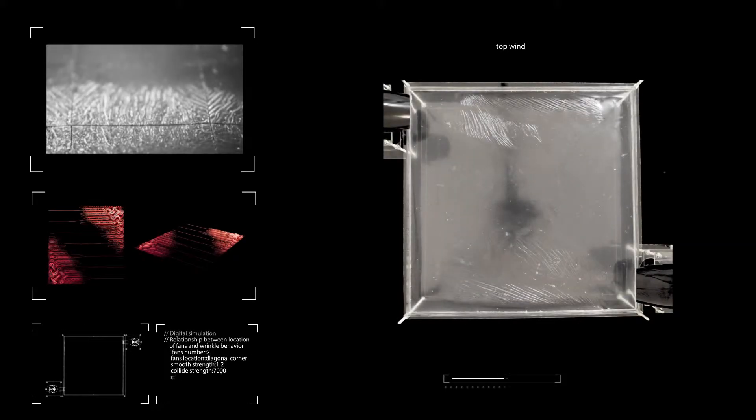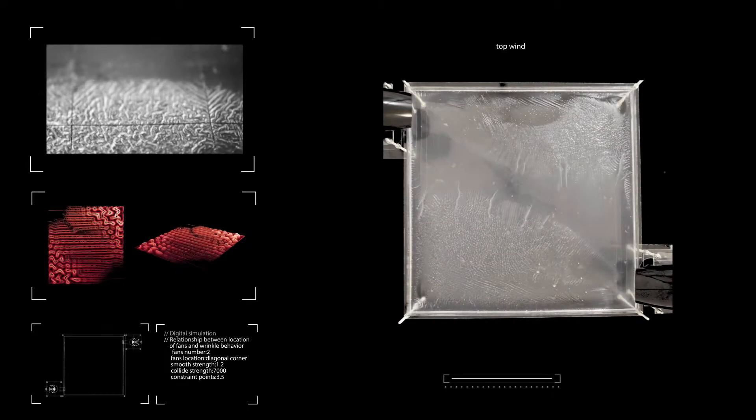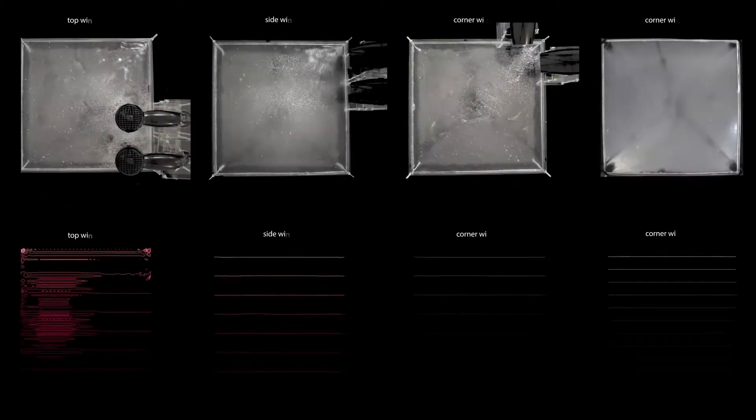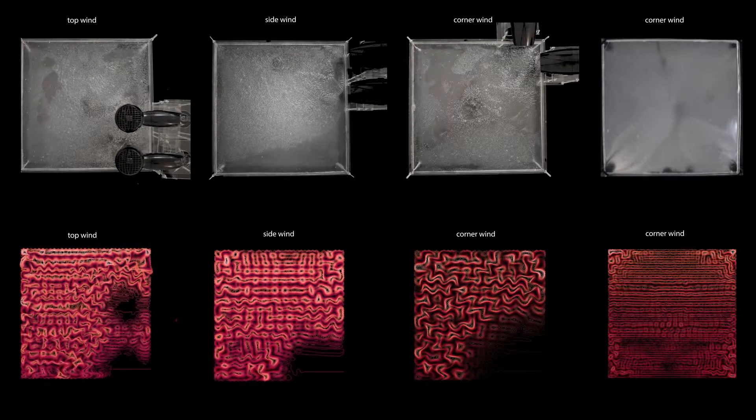In order to better understand bioplastic's properties, air flow experiments were conducted. Wrinkles emerged because of expansion and contraction. By changing the direction of air flow and adding control lines, the physical performance of wrinkle is explored.